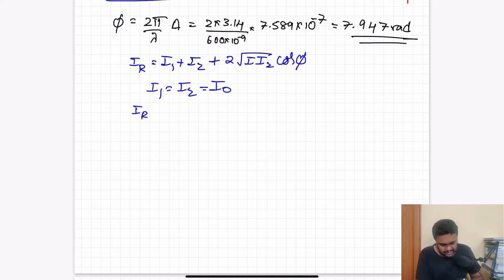If the two sources are coherent, then i1 is equal to i2 is equal to i naught. So resultant intensity, i naught plus i naught, that is two i naught, plus two into root of i naught into i naught, i naught square. So i naught, two i naught cos phi.